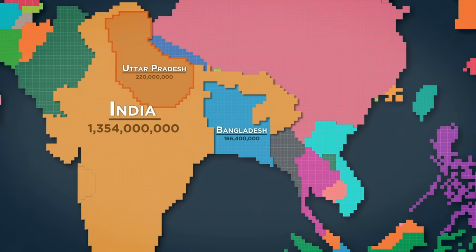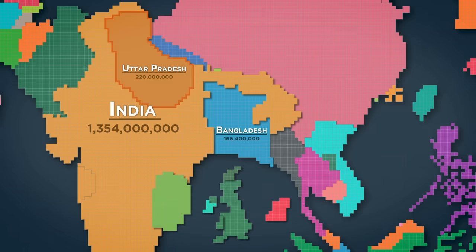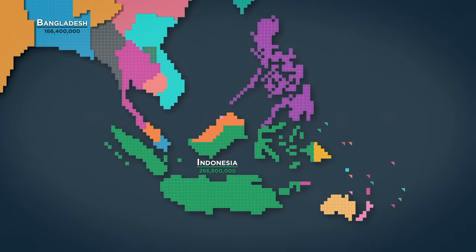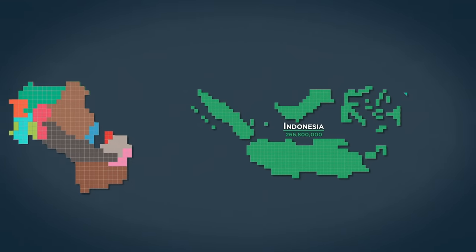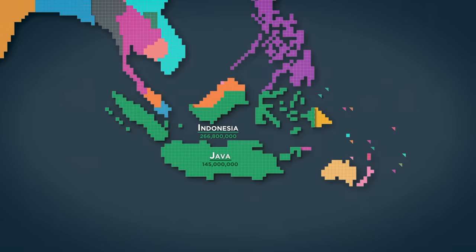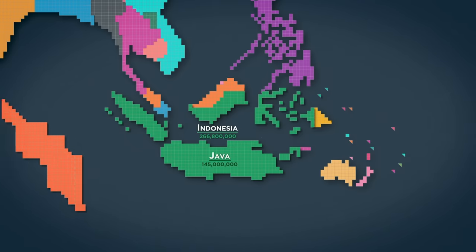Bangladesh has a really huge population for her size at 166 million people, which is more than Germany, the UK, and the Netherlands all combined. But the world's most populous Islamic country is Indonesia, with nearly 267 million people. To put that into perspective, if you subtract Turkey and Egypt from this equation, then Indonesia has a higher population than the entire rest of the Middle East combined. Inside of Indonesia is the island of Java, which is the world's most heavily populated island. And as mentioned previously, Java's population is even greater than that of all of Russia's.